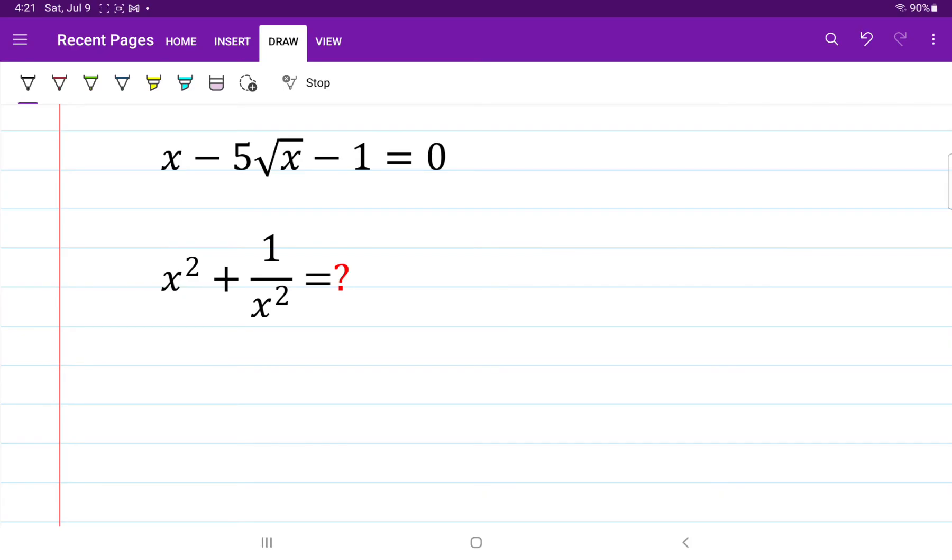we'll be looking to solve the sum of x squared plus 1 over x squared when we are given the basic equation of x minus 5 square root of x minus 1 equal to 0.